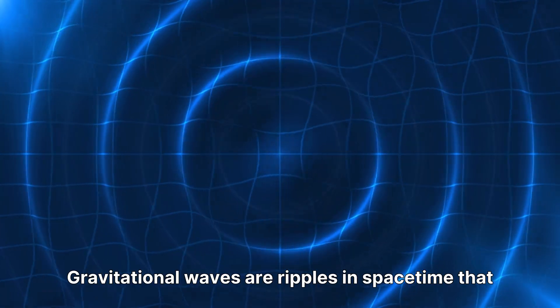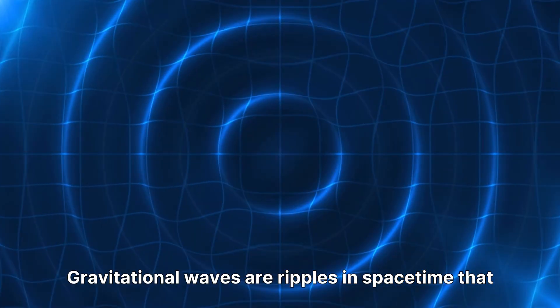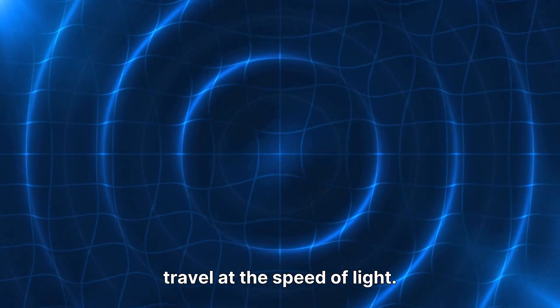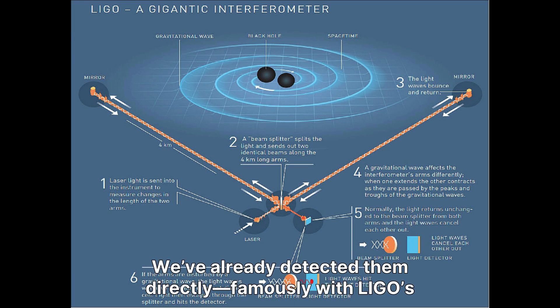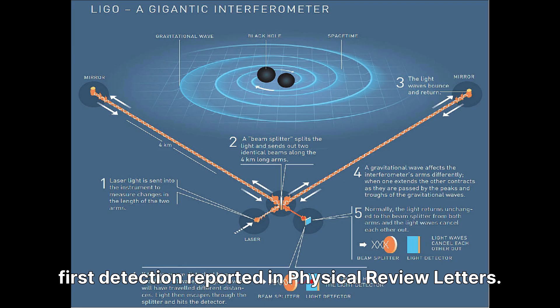First, quick grounding. Gravitational waves are ripples in space-time that travel at the speed of light. We've already detected them directly, famously with LIGO's first detection reported in Physical Review Letters.